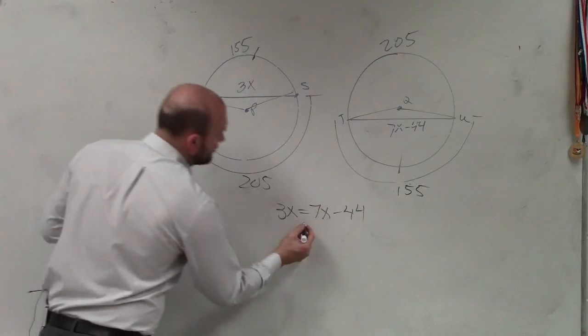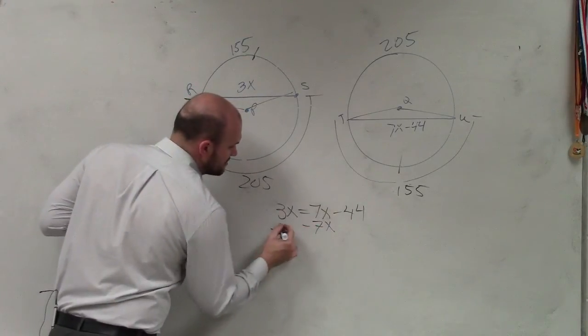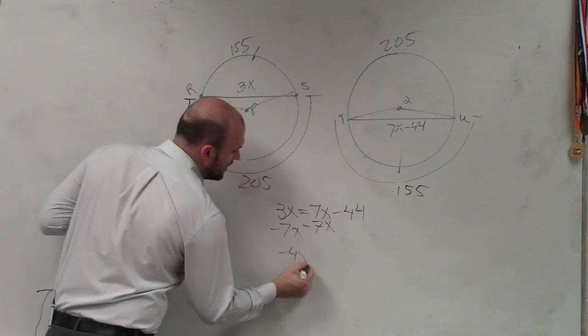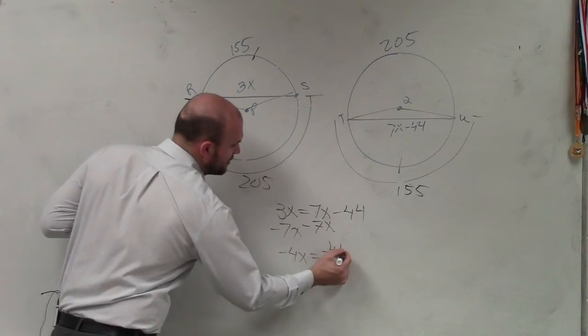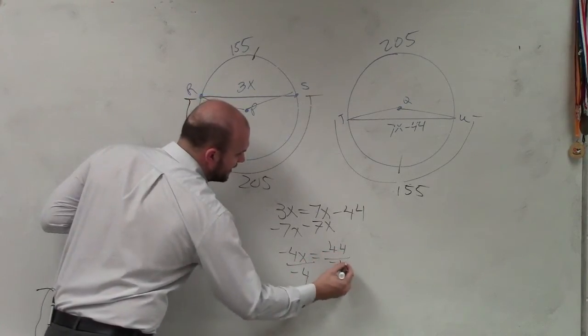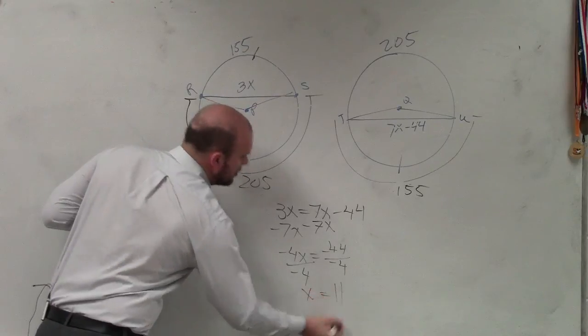Then I solve. Subtract 7x, negative 4x equals negative 44. Divide by negative 4, divide by negative 4, x equals 11.